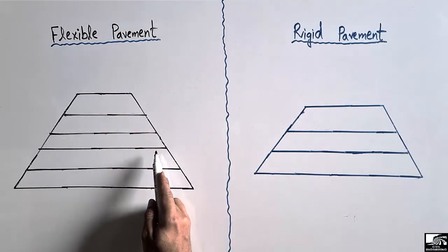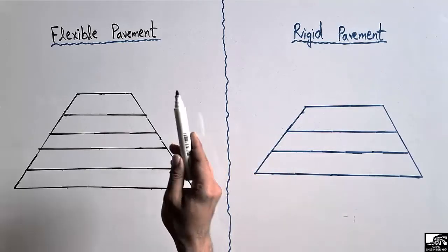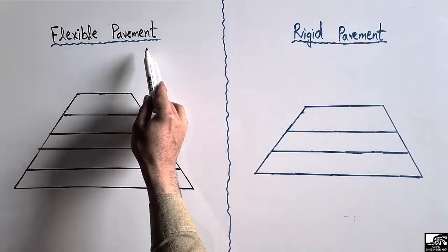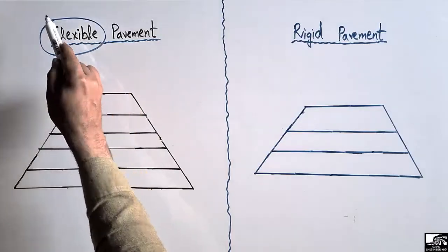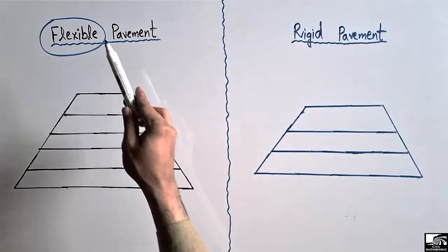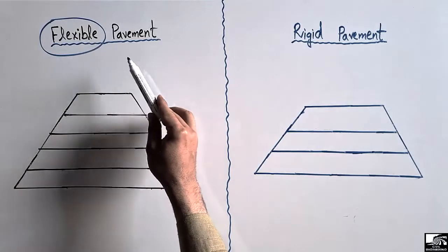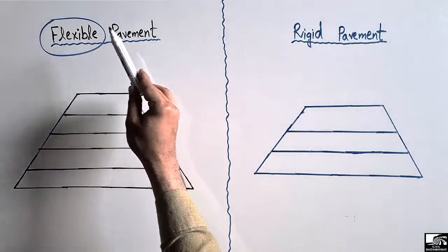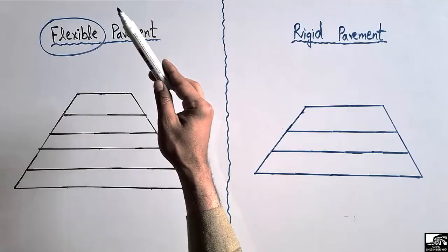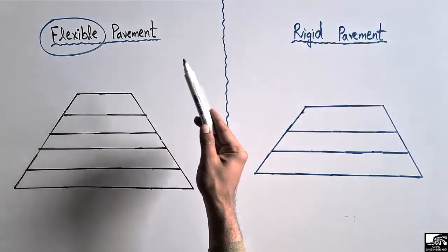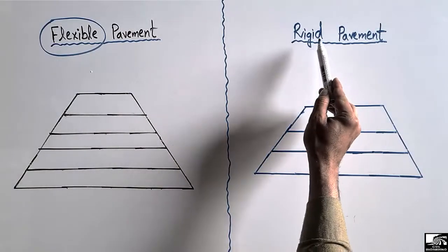The flexible pavement has a high number of layers while the rigid pavement has fewer layers. The flexible pavement is known as flexible because it is made up of flexible material — soil and asphalt or bituminous material — and that's why it shows flexible behavior when the load comes on the layers.